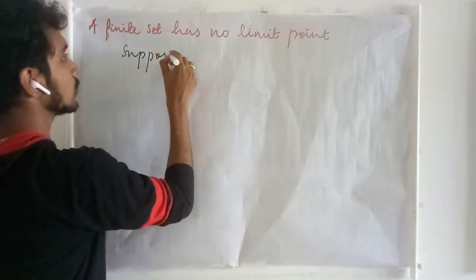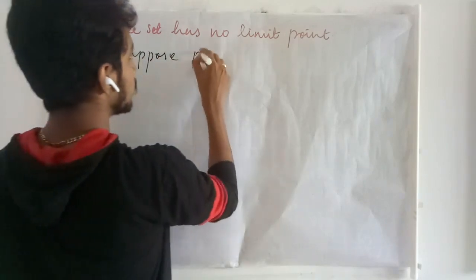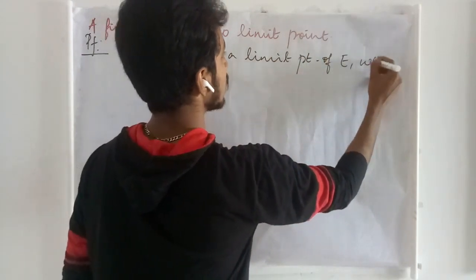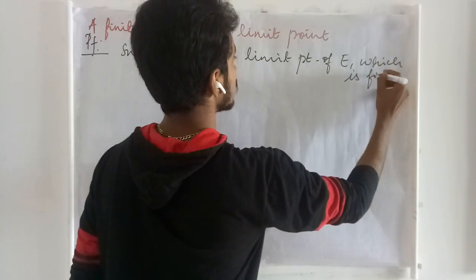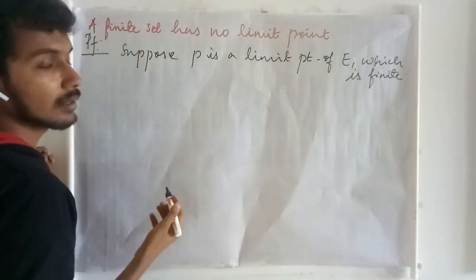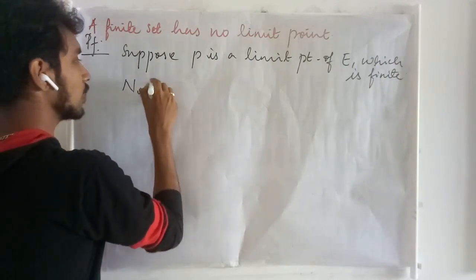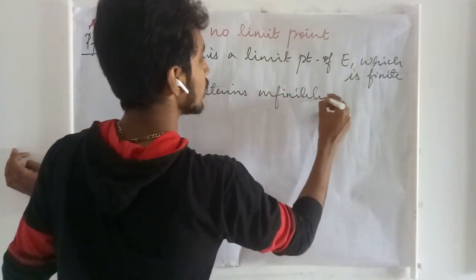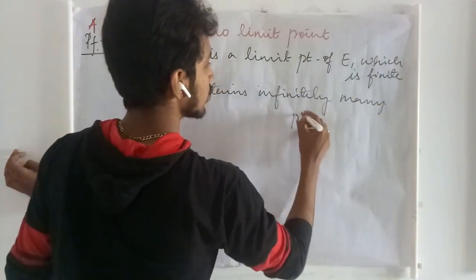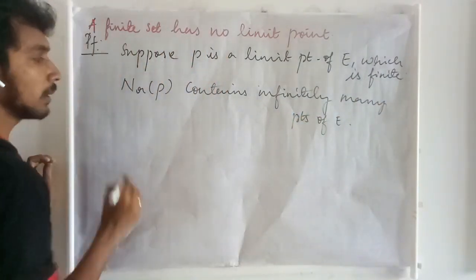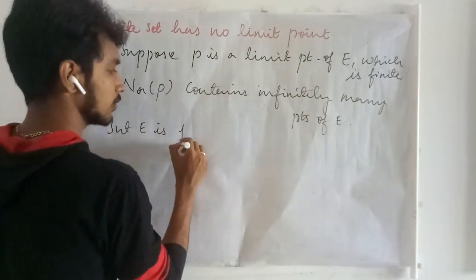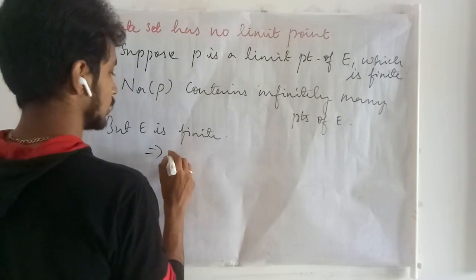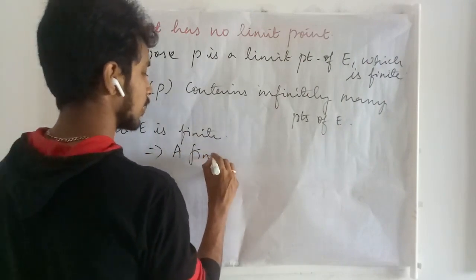In order to prove this, suppose P is a limit point of E, where E is a finite set. Using that result, we can say that N_r contains infinitely many points of E. But E is a finite set, and in a finite set we cannot identify infinitely many points. This tells us that a finite set has no limit points.